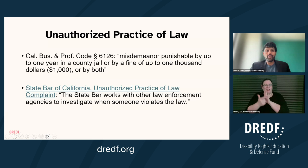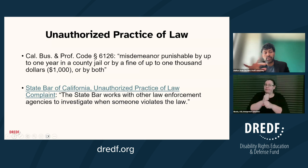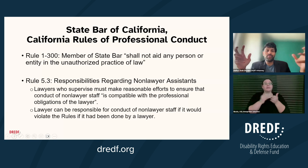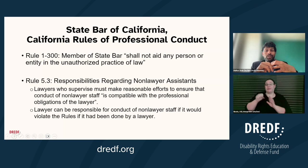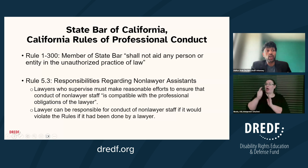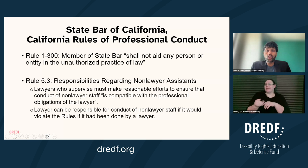The California State Bar works with law enforcement agencies to investigate when someone violates the law, so there is a real risk of prosecution for the unlawful practice of law. The State Bar is very vigilant about ensuring that the practice of law is generally protected. Additionally, a member of the State Bar shall not aid any person or entity in the unauthorized practice of law — so the repercussions implicate not only the non-attorney but the attorney themselves.